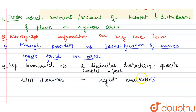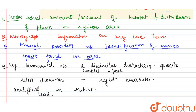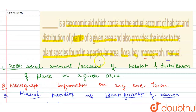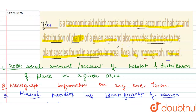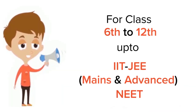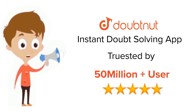Keys are generally analytical in nature. Each statement in a key is called a lead. Going back to our question — the taxonomic aid which contains the actual account of habitat and distribution of the plants of a given area, and provides the index to plant species found in a particular area — the answer is flora. Thank you. For class 6–12, IIT JEE and NEET level, trusted by more than five crore students. Download DoubtNut today.